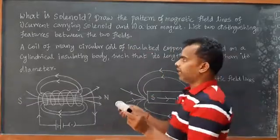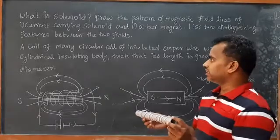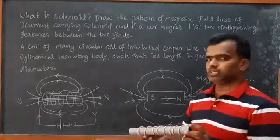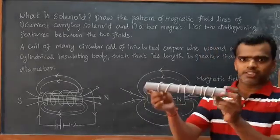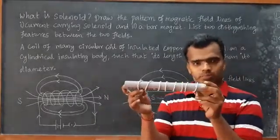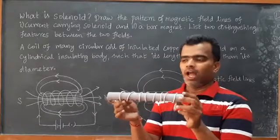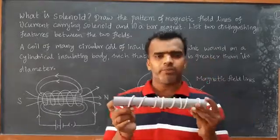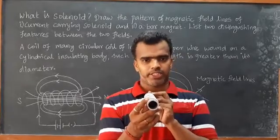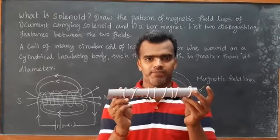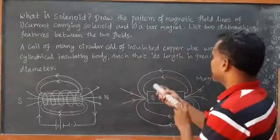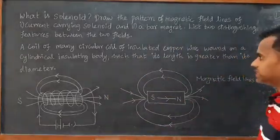A solenoid is a coil of many circular turns of insulated copper wire, wound on a cylindrical insulating body, such that its length is greater than its diameter.